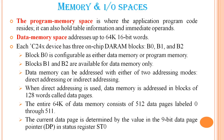Data memory space addresses up to 64K words. Each device has three on-chip DRAM blocks: B0, B1, and B2. Block B0 is configured as either data memory or program memory. Block B1 and B2 are available for data memory only.